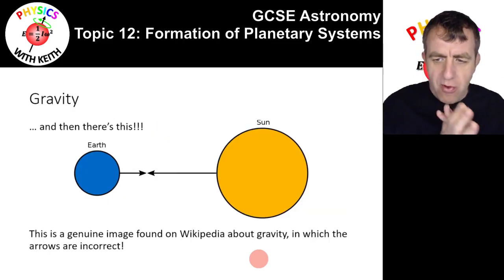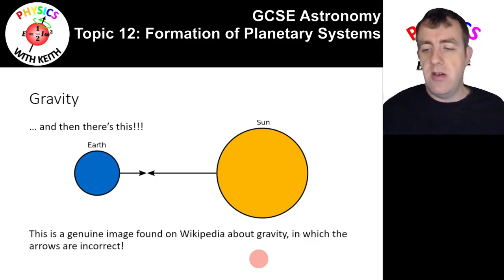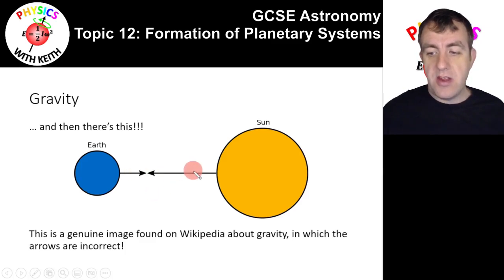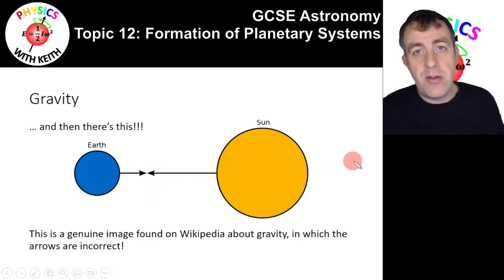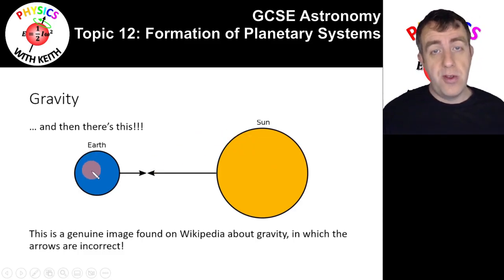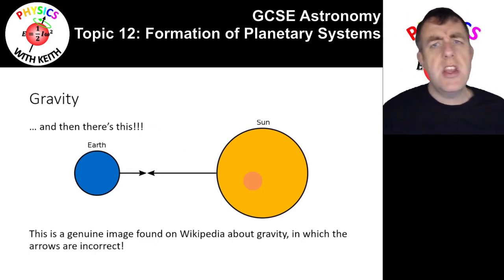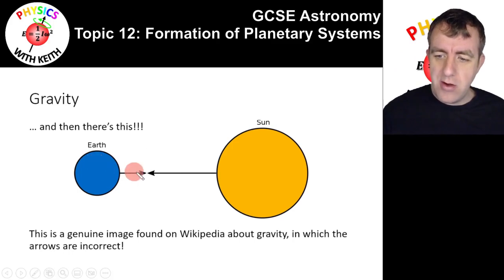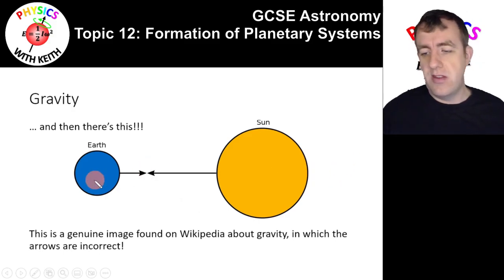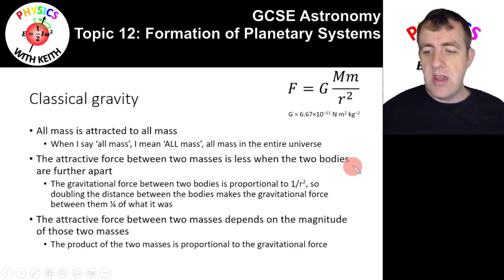The problem is made worse by resources out there. Here's an image from Wikipedia about gravity showing the Earth with a little arrow and the Sun with a big arrow. But the force of the Sun on the Earth is the same as the force of the Earth on the Sun — those arrows should be equal magnitude. If the arrows represent acceleration, they're the wrong way around — the Earth's arrow should be longer than the Sun's. So everything about this image is wrong.